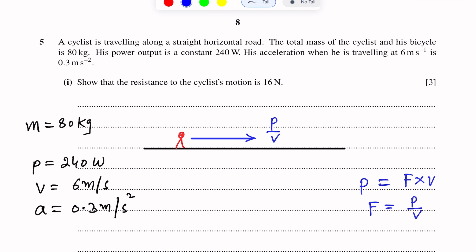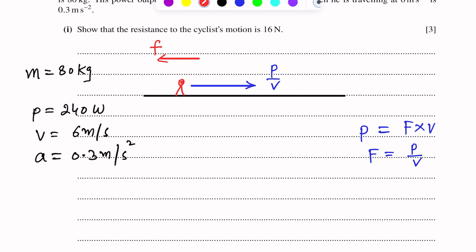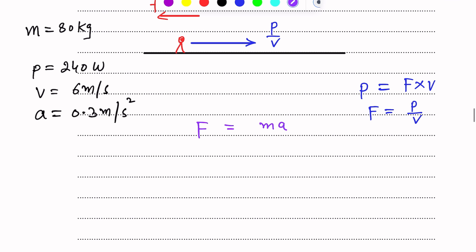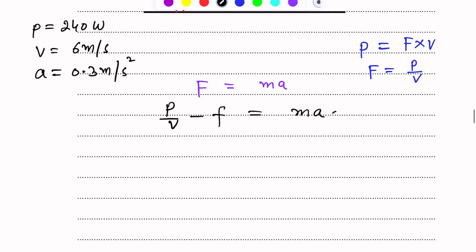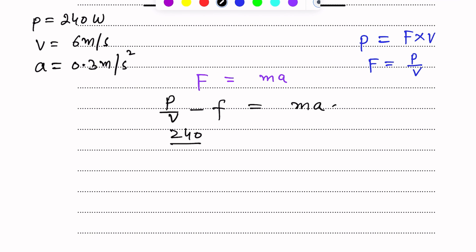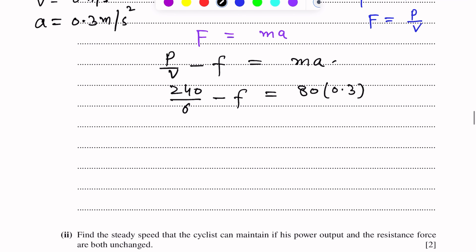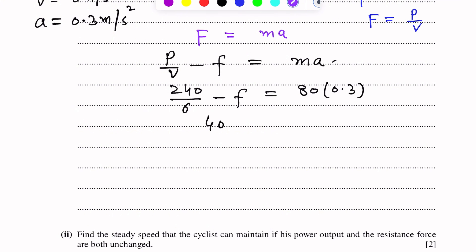We need to find the resistance, which acts in the opposite direction of motion. Using Newton's second law, the net force equals P over V minus the resistance force F. So P over V minus F equals ma. Power is 240, V is 6, so P over V is 40. Mass is 80 and acceleration is 0.3.